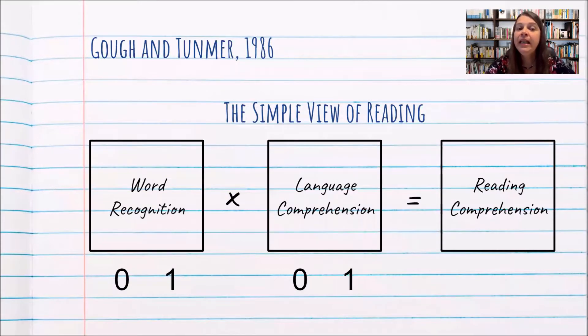We know that reading comprehension can be described as the product of word recognition times language comprehension. That's the simple view of reading. We also know that there's nothing simple about reading.